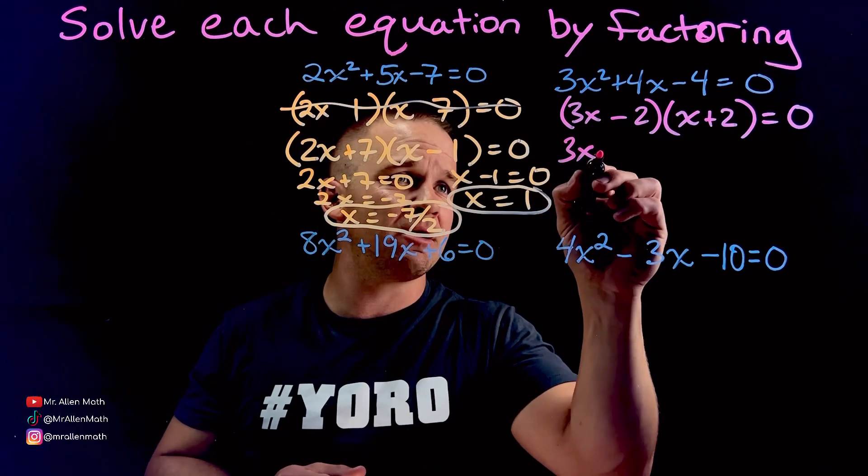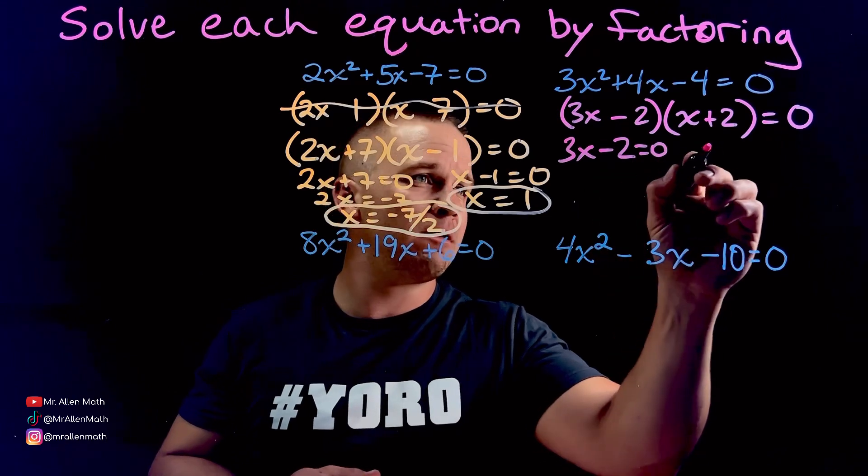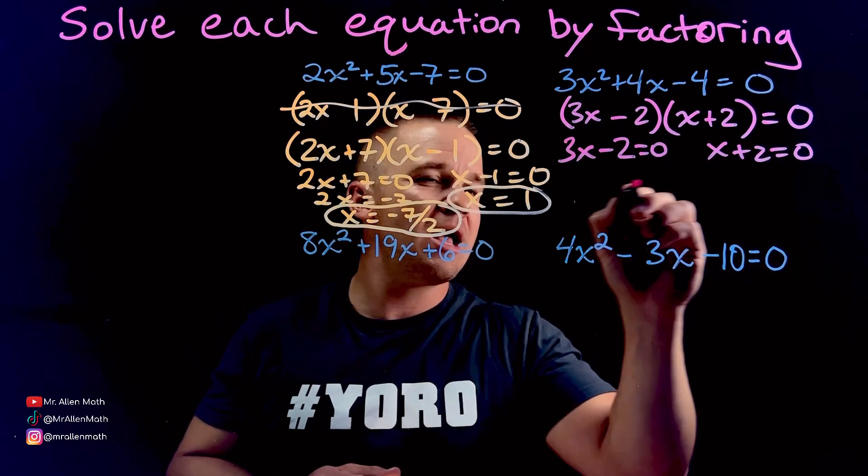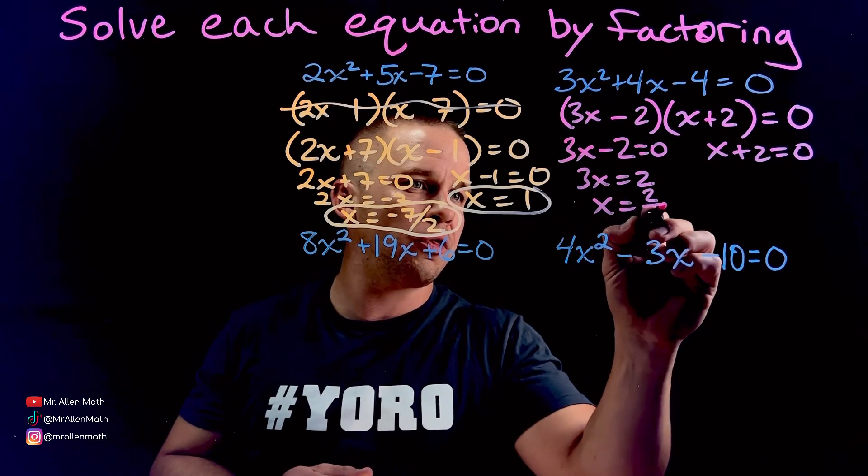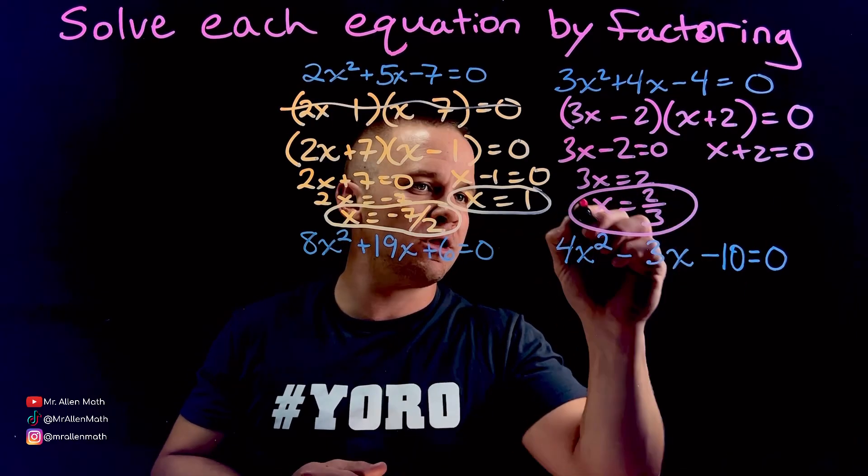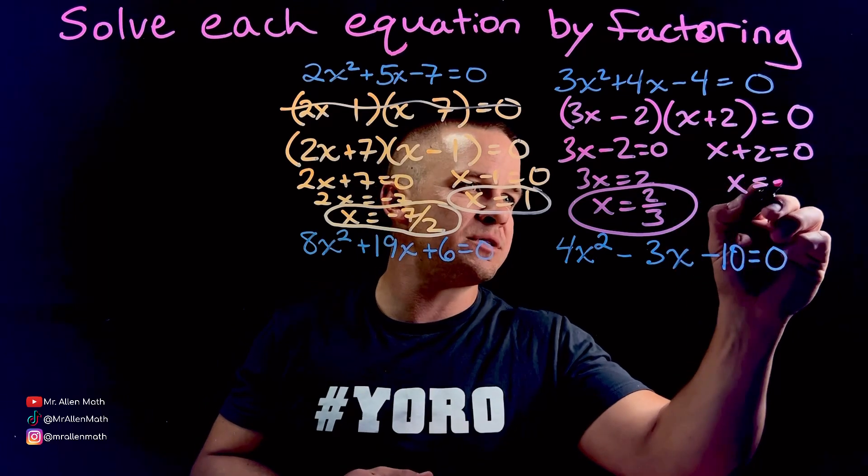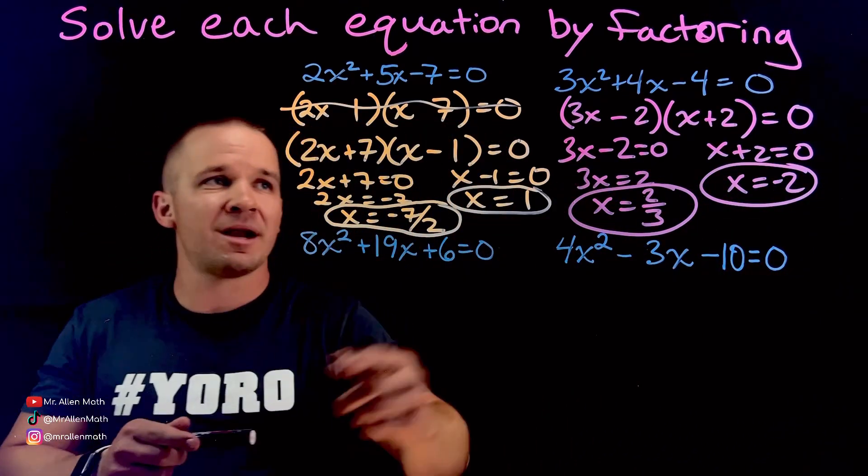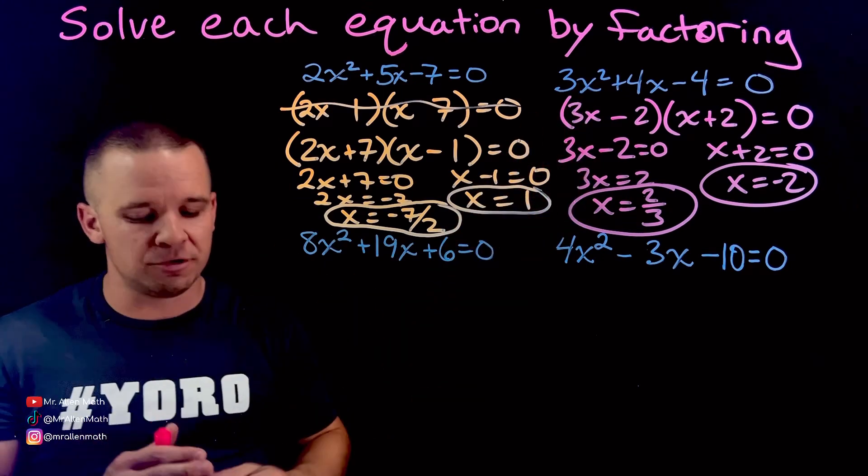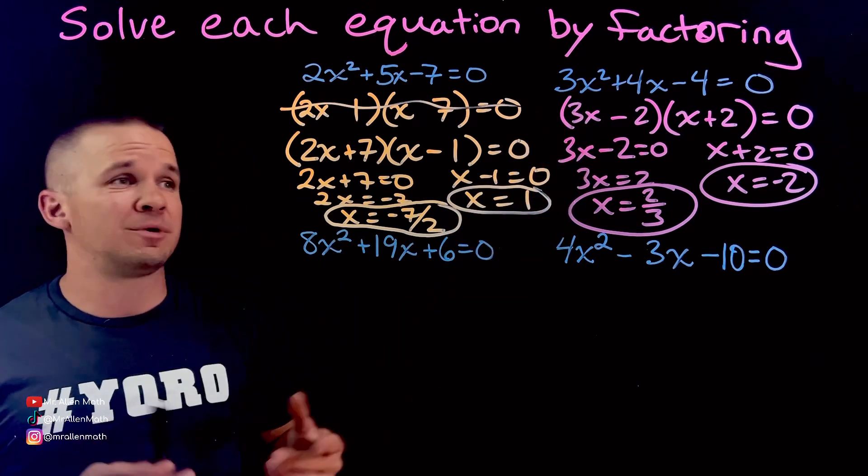So I'm going to set these guys equal to zero. 3x minus 2 equals zero. x plus 2 equals zero. I'm going to add 2, so I get 3x equals 2. Divide by 3, I get x equals 2 thirds. Circle it. And then over here, I'm going to get x equals negative 2. Circle it. Boom. Two solutions. Quadratic degree of 2. It's going to have two solutions there. That's the fundamental theorem of algebra. That's dope.